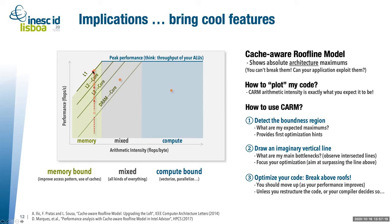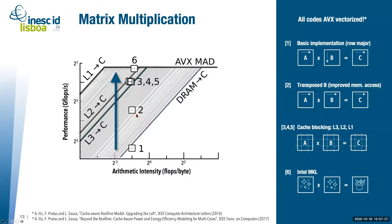Of course, we cannot break any roof higher than L1 given our application characteristics. Once we know how to analyze it, let's look at the first simple case study. This is typical matrix multiplication — but not a regular one. We put effort into deriving a very well optimized AVX version of the code.